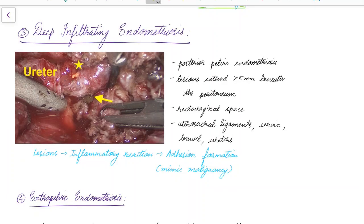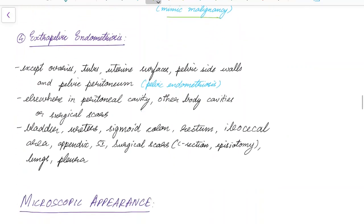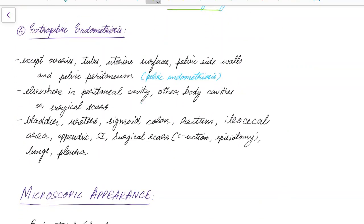Deep infiltrating endometriosis, also known as posterior pelvic endometriosis, has lesions extending greater than 5 mm beneath the peritoneum. It may involve the rectovaginal space, uterosacral ligaments, cervix, bowel, or ureter. The lesions cause an inflammatory reaction leading to the formation of adhesions, so in this case endometriosis can mimic malignancy.